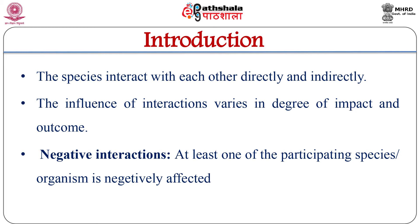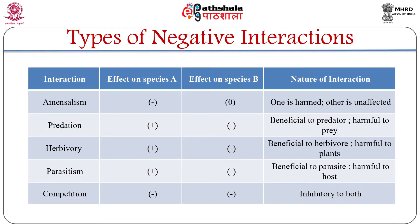There are several classes of interactions broadly divided into positive and negative interactions. Negative interactions are mainly classified into five types. First is amensalism, where one species is harmed and the other is unaffected. Next is predation, which is beneficial to the predator and harmful to prey. Herbivory is beneficial to the herbivore and harmful to plants. Parasitism is beneficial to the parasite and harmful to the host. Competition is inhibitory to both. The signs plus, zero, and minus represent positive, neutral, and negative effects respectively.